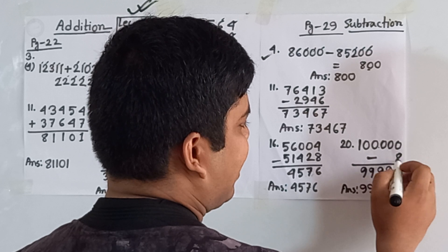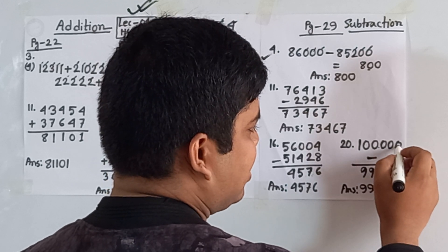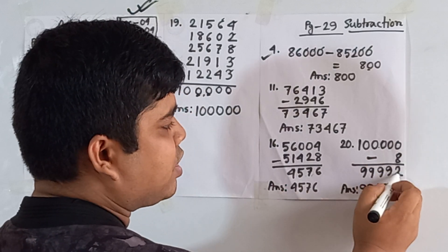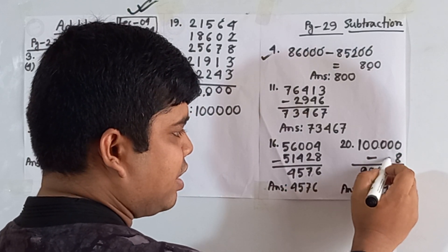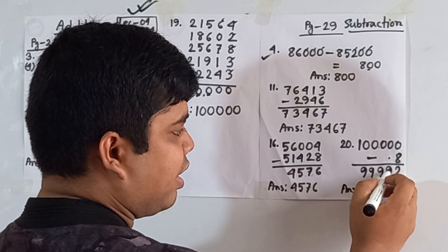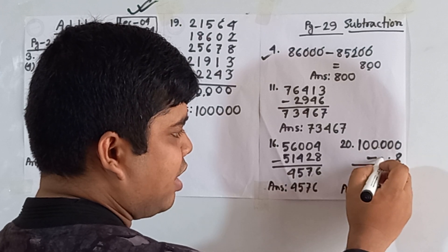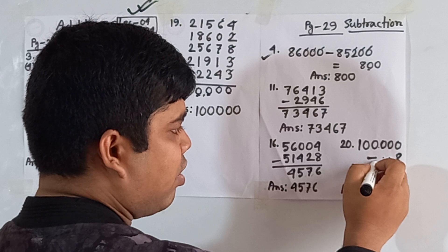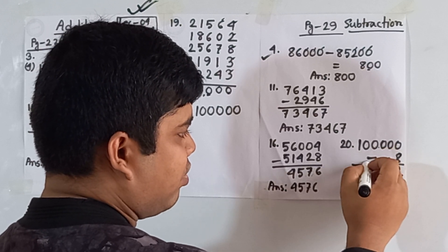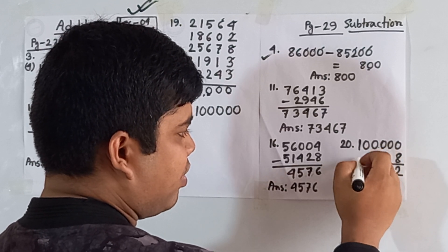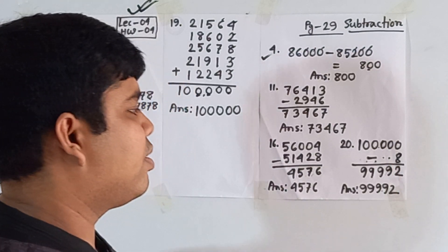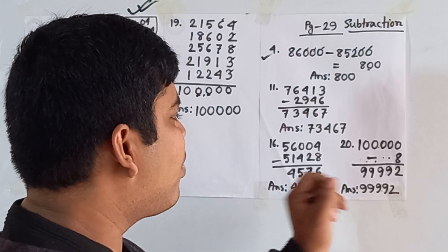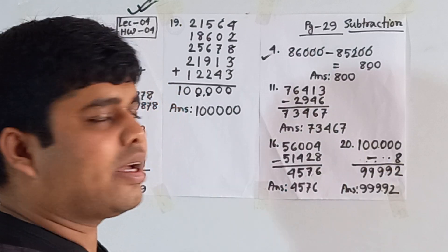Question number twenty: 1 lakh (100,000) minus 8. Ones place: 0 is smaller than 8, so borrow — 10−8=2. We keep borrowing across each digit: each 0 becomes 9 after borrowing. So the answer is 99,992.